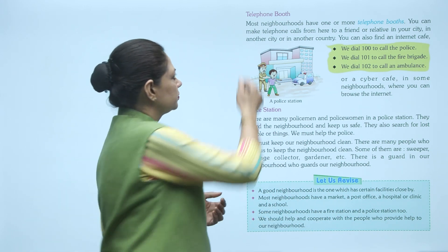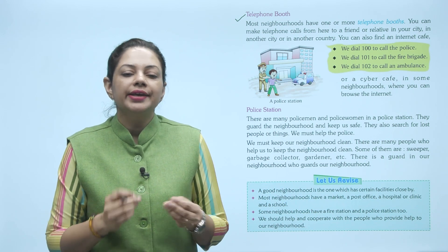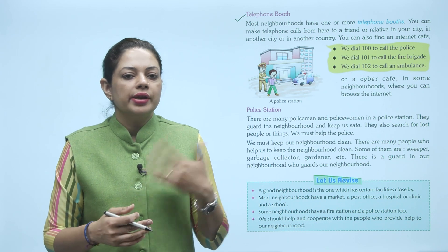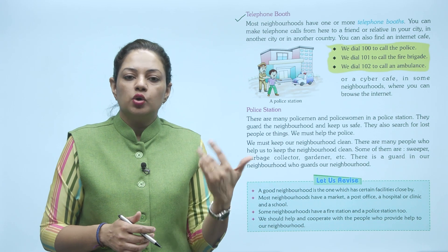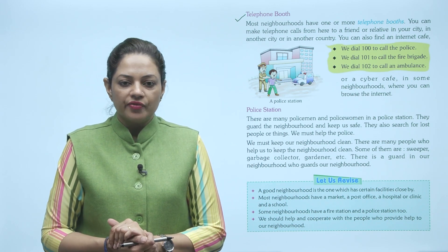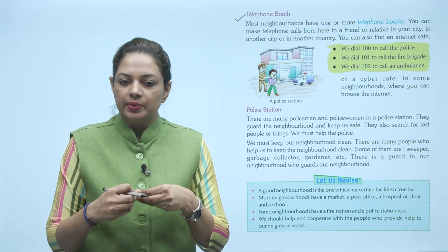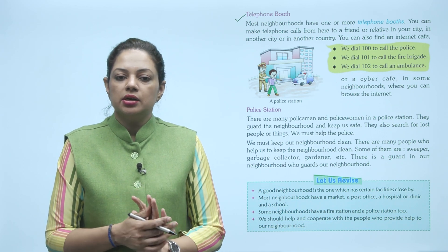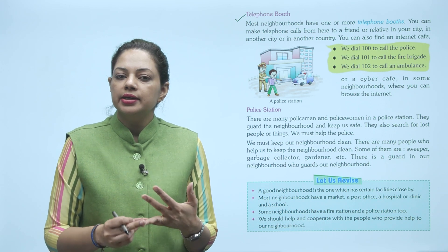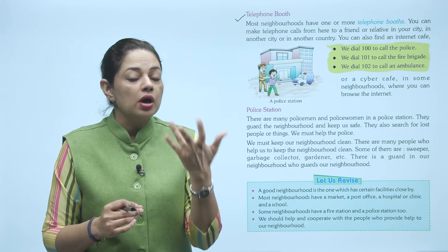Next is telephone booth. Most neighborhoods have one or more telephone booths. Har neighborhood mein ek ya ek se zyada telephone booths hote hain. You can make telephone calls from here to a friend or relative in your city, another city, or another country. Yahan se hum kisi bhi friend ya relative ko, kisi bhi city ya doosri city mein, ya phir doosre desh mein call kar sakte hain. You can also find an internet cafe, also called a cyber cafe, in some neighborhoods where you can browse the internet. We dial 100 to call the police, and 101 to call the fire brigade — toh bacchon aapko ye dono numbers yaad hone chahiye.